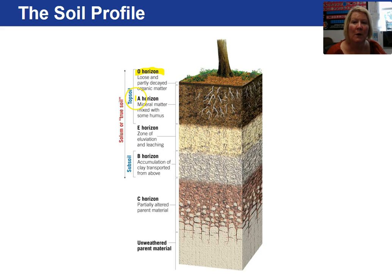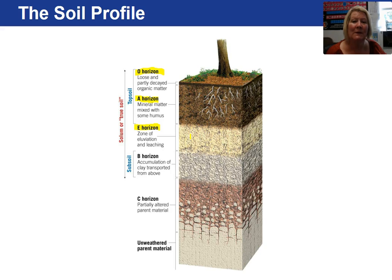Below the O horizon is the A horizon, where we have mineral matter with some organics, what we call humus. Below the A horizon is the E horizon — this is the zone where material gets dissolved or physical particles get removed and taken down to the zone of accumulation called the B horizon. The C horizon is partially altered parent material, and below that is the unweathered parent material.